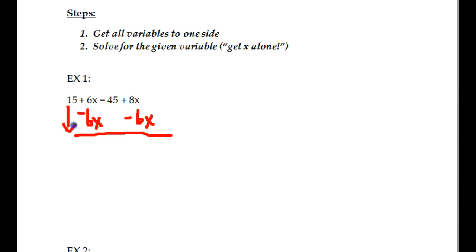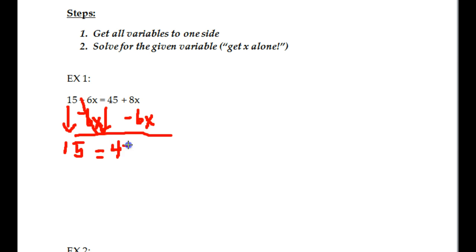Bring down my 15. 6x minus 6x cancels out. Bring down my equal sign. Bring down my 45. 8x minus 6x is a positive 2x.